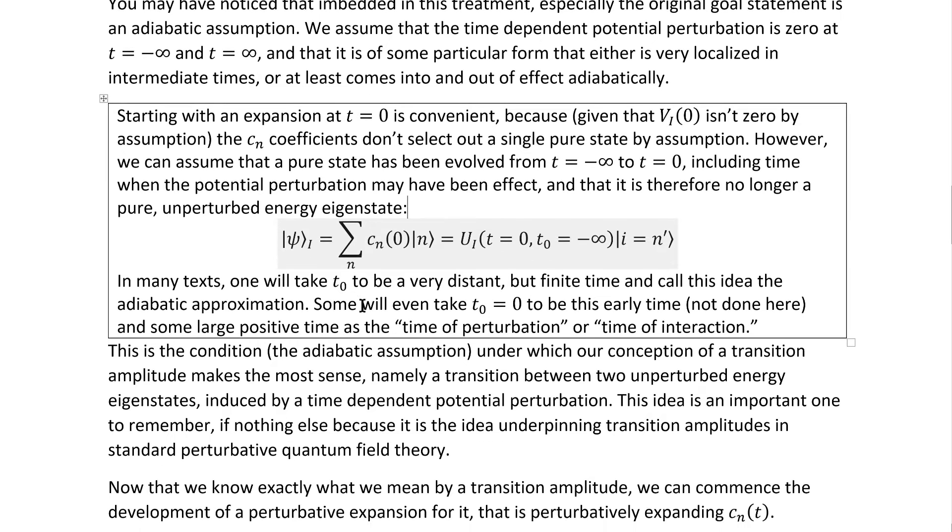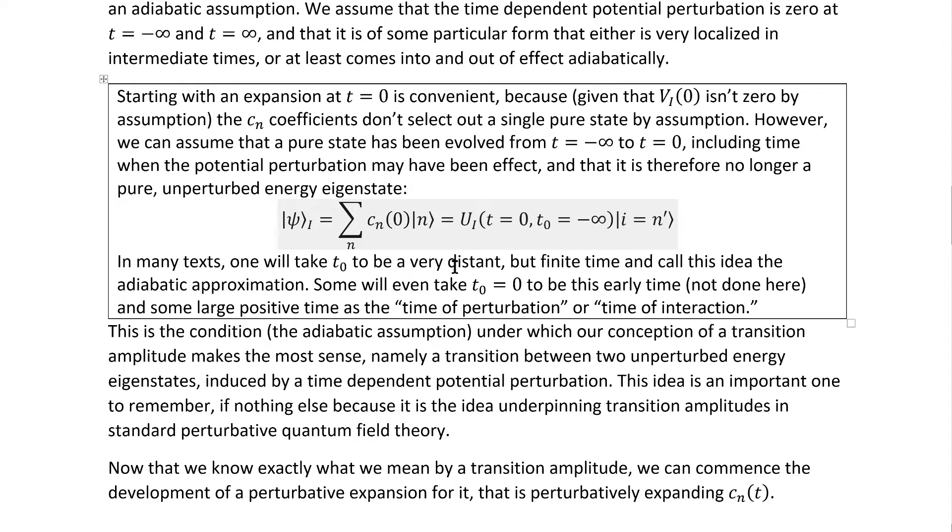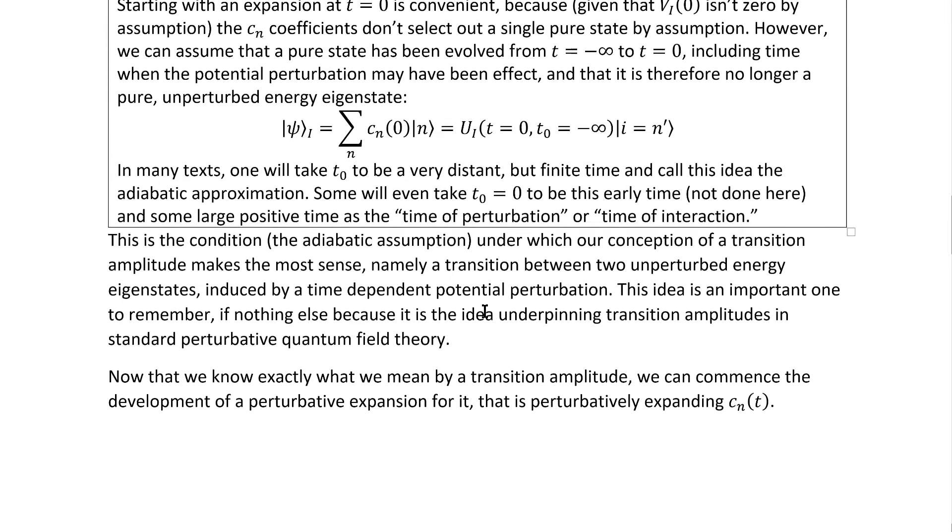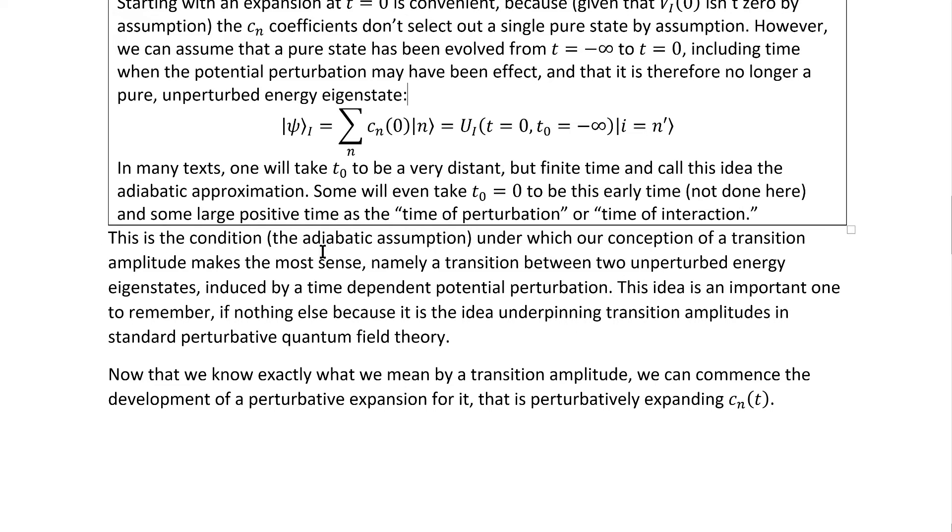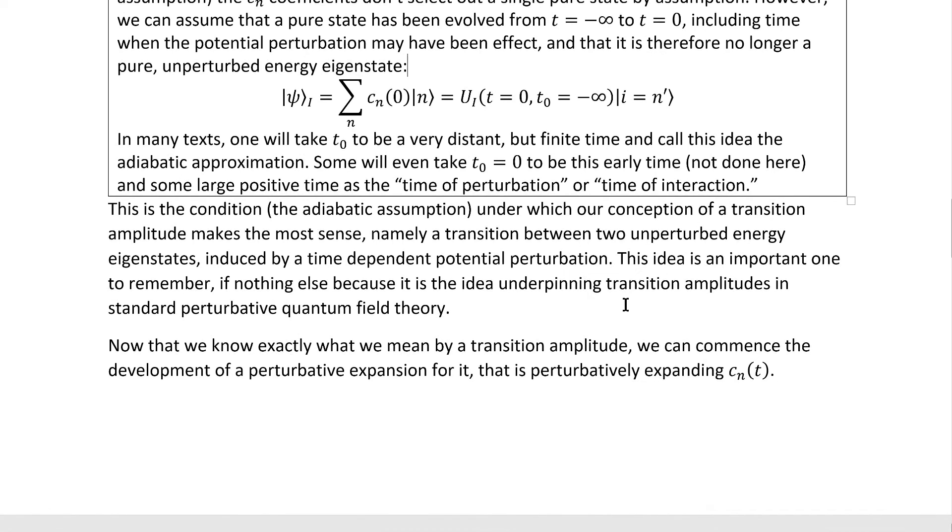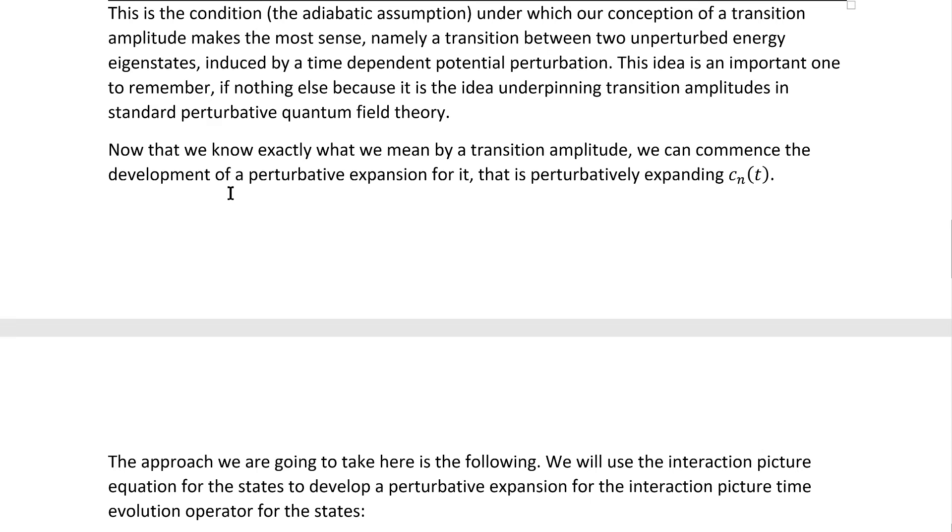In many texts, one will take T0 to be a very distant but finite time, as will the final time, actually, and call this idea the adiabatic approximation. Some will even take T zero equals zero to be the early time, not done here, and some large positive time to be the time of perturbation, or the time of interaction, depending on what they're doing. It is under this condition, the adiabatic assumption, that our conception of a transition amplitude as stated makes the most sense, namely a transition between two unperturbed energy eigenstates induced by a time-dependent potential perturbation. This idea is an important one to remember because it is, among other things, the underpinning of transition amplitudes in the standard perturbative quantum field theory.